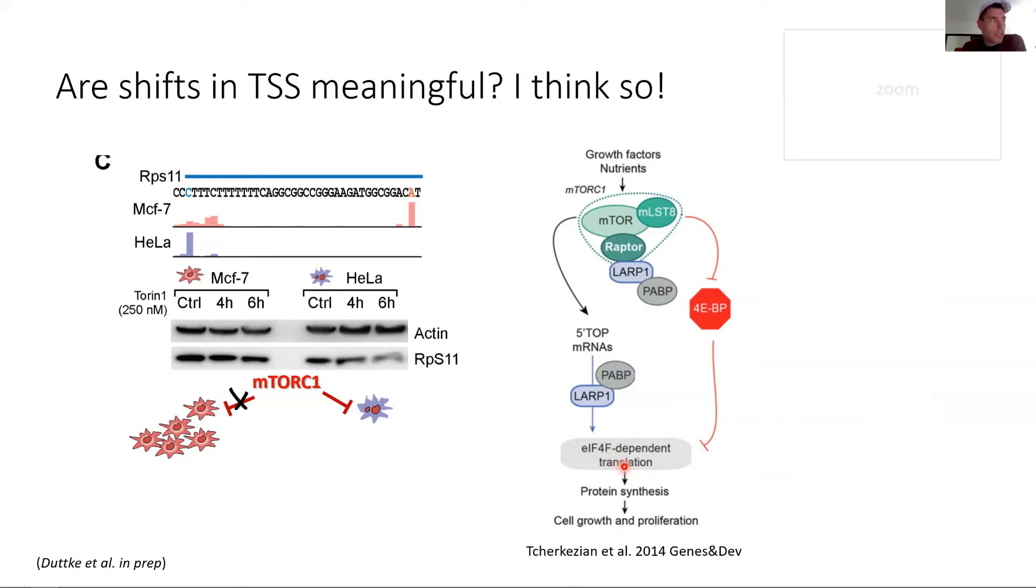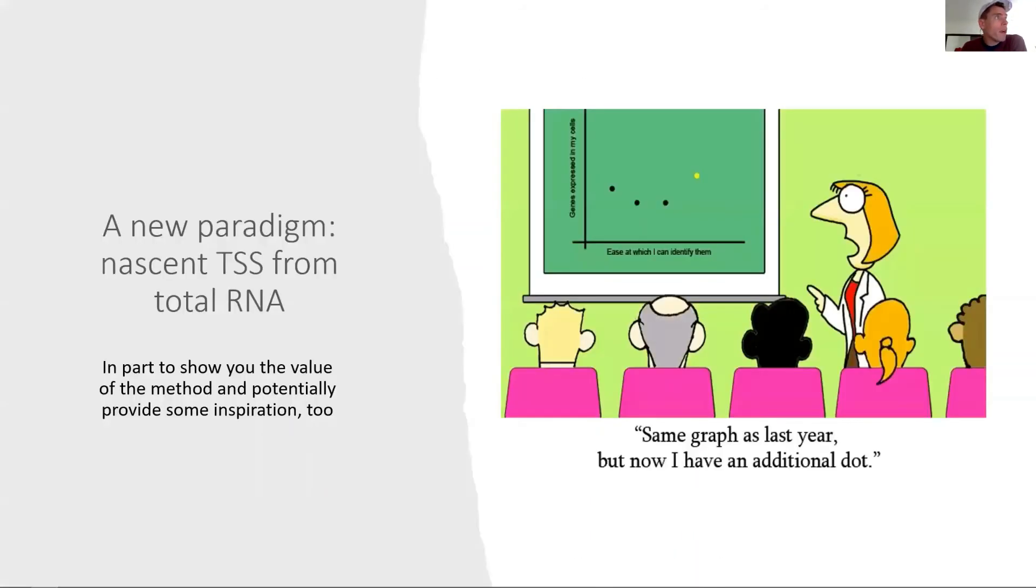The model for that is basically that mTOR is upstream of translation regulation in response to growth factors and nutrients. Upon phosphorylation of mTOR it mediates via 4E-BP1 phosphorylation and repression of this eIF4 protein required for translation. This 4E-BP1 actually likes this CTTTT, this poly-pyrimidine stretch. So MCF7 cells, by shifting your start site downstream, you lack this binding site for 4E-BP1 and therefore you're no longer dependent on mTOR signaling because mTOR uses a lot of the times these ribosomal protein genes to repress translation. So yes, I think shifts in start sites are meaningful. Not always, but it can have dramatic biological impact.